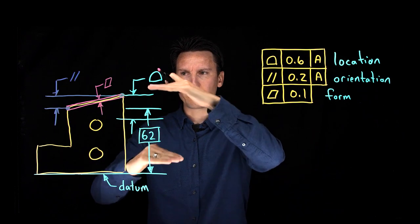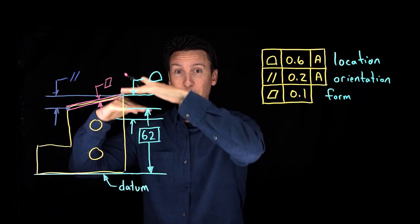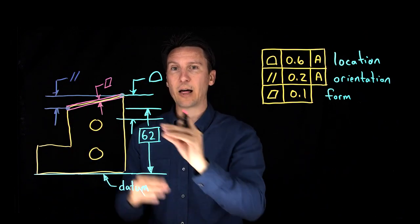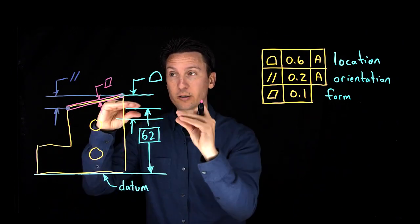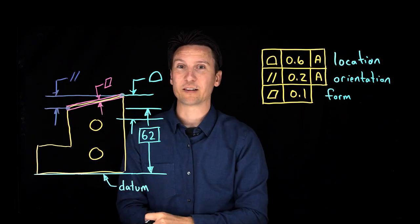Profile is two parallel planes but they're centered on the basic dimension. Parallelism is two parallel planes that can float and best fit max minus min and then flatness is two parallel planes that are unconstrained just looking at the concave convex and waviness on that surface.